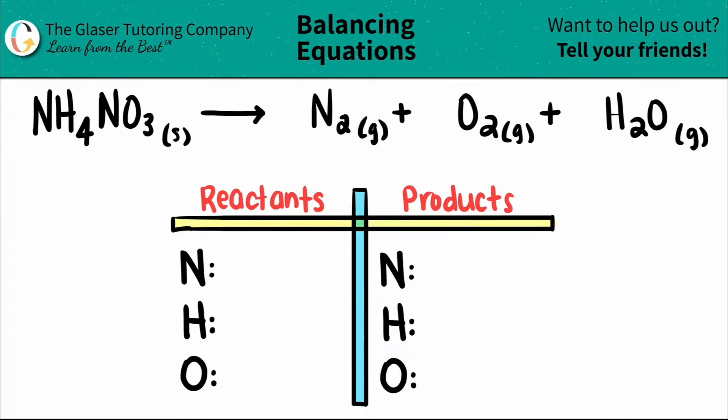For the total nitrogen, keep in mind that there are two spots in which you see Ns. There's one nitrogen here because I don't see a subscript and there's one nitrogen here. So one plus one is a total of two nitrogens.